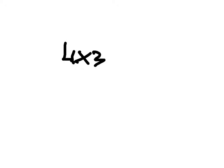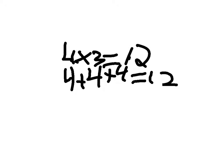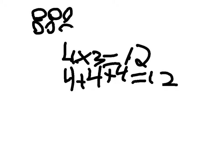4 times 3 equals 12. 12 plus 4 plus 4 equals 12. You can count them up by these circles that I'm making. So you can count them up now.